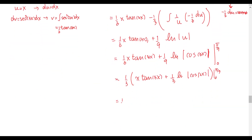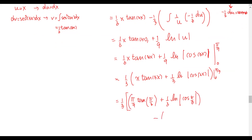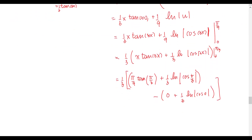Next, we replace the upper limit and subtract the substitution using the lower limit. Substituting the upper limit pi over 9: x becomes pi over 9, and 3x becomes pi over 3. We get pi over 9 times tangent of pi over 3, plus one third times natural log of the absolute value of cosine of pi over 3, minus the quantity zero times tangent of zero plus one third times natural log of cosine at zero. Since cosine of zero equals 1, natural log of 1 equals zero, so the lower limit term vanishes.